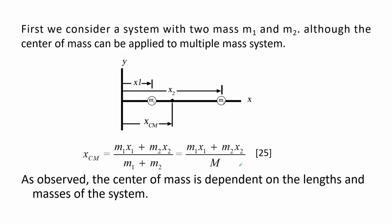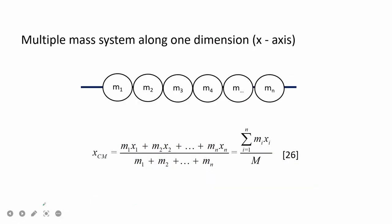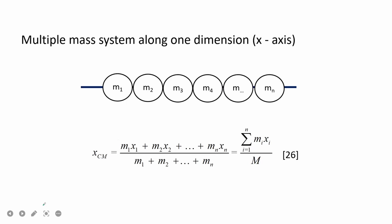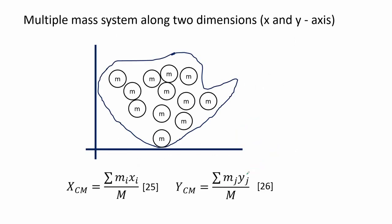To calculate the center of mass, consider a system with two masses m1 and m2 along the x-axis. The center of mass is the sum of each mass times its position, divided by the total mass. This extends to multiple masses by summing all masses times their corresponding positions over the total mass. In two-dimensional space, we take components, giving two equations for xcm and ycm.